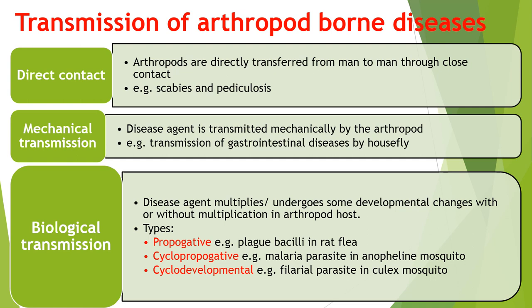Just to revise, there are three types of transmission of these diseases. First is direct contact, second is mechanical transmission, and third is biological transmission. In direct contact, the arthropods are directly transferred from man-to-man through close contact — for example, the itch mite in case of scabies and louse in case of pediculosis. In mechanical transmission, the disease agent is transmitted mechanically by the arthropod — meaning the arthropods carry the organism on their body or in the gut, for example, transmission of gastrointestinal diseases by housefly.